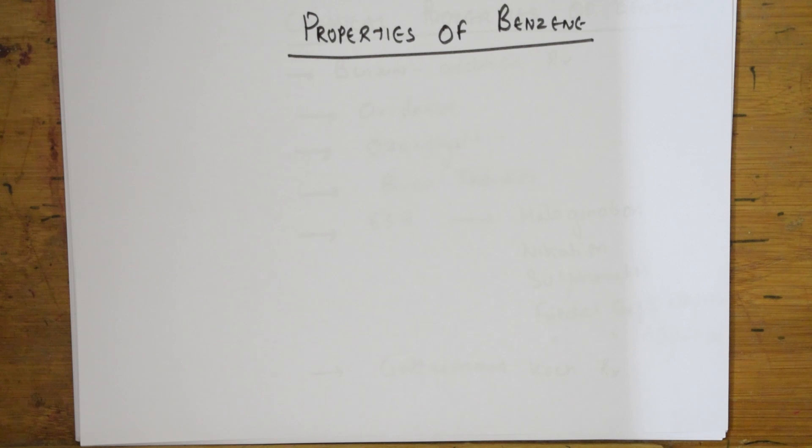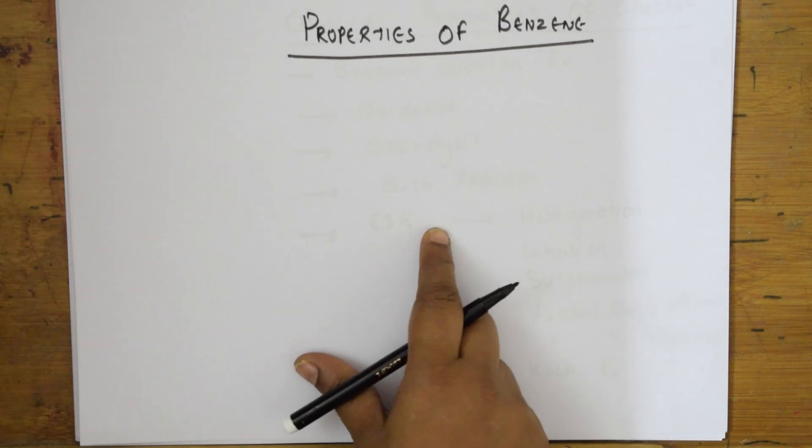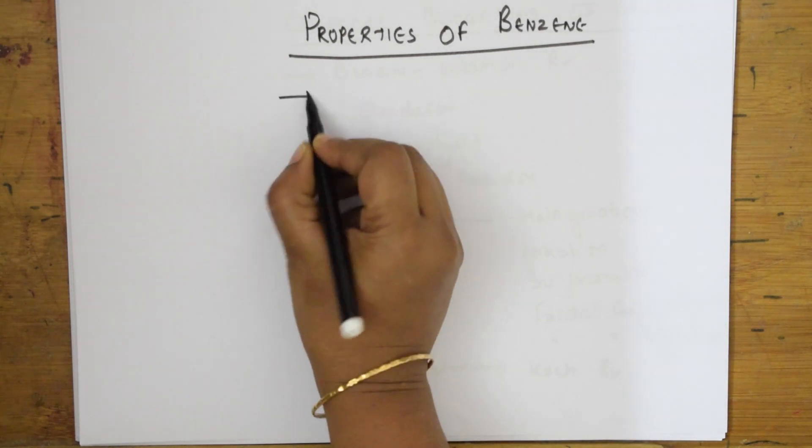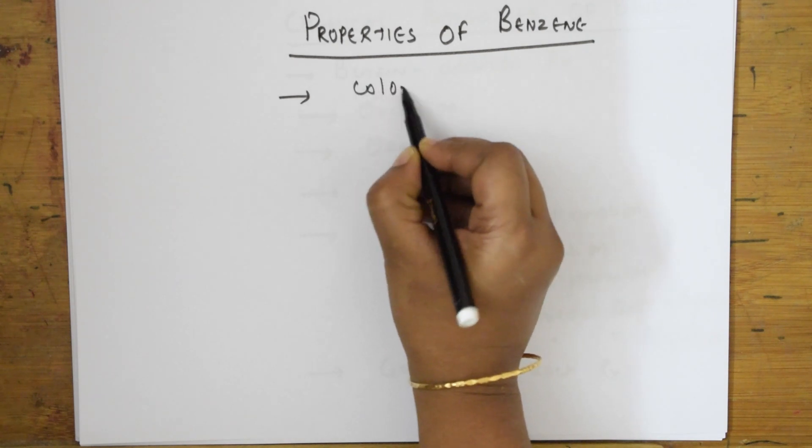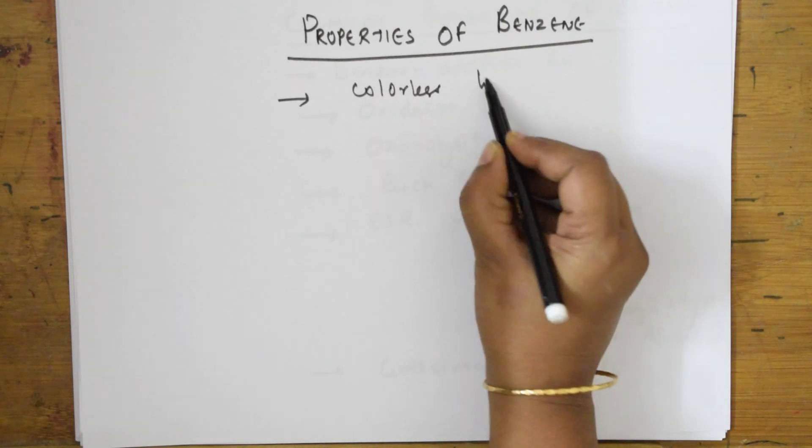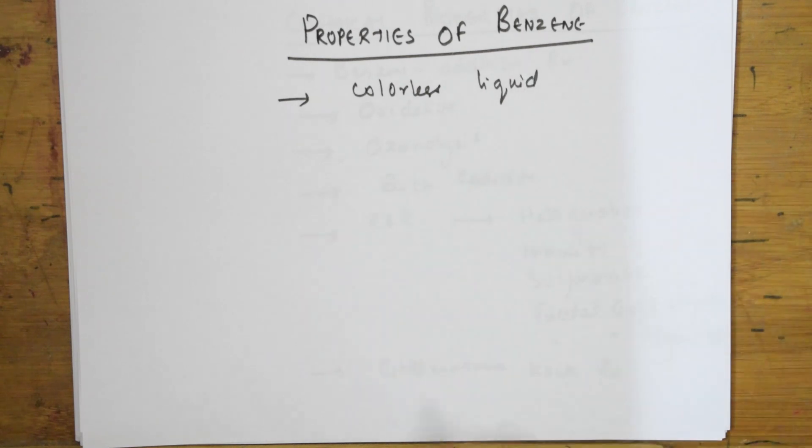Properties of benzene - we will study the physical as well as chemical properties. When I speak about properties of benzene, I hope you would have seen it in the lab. So benzene, what is the color? Benzene is a colorless liquid.